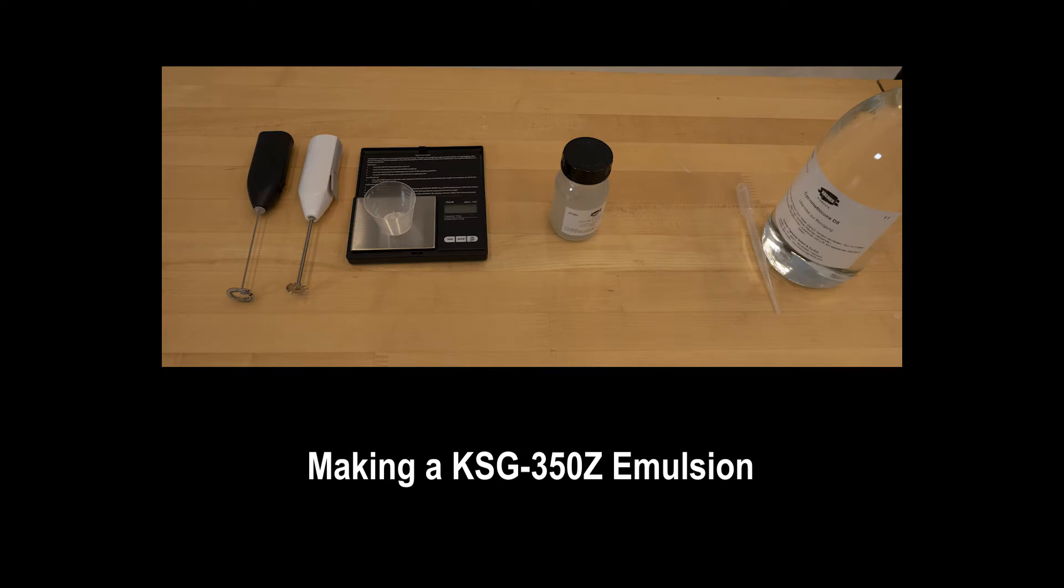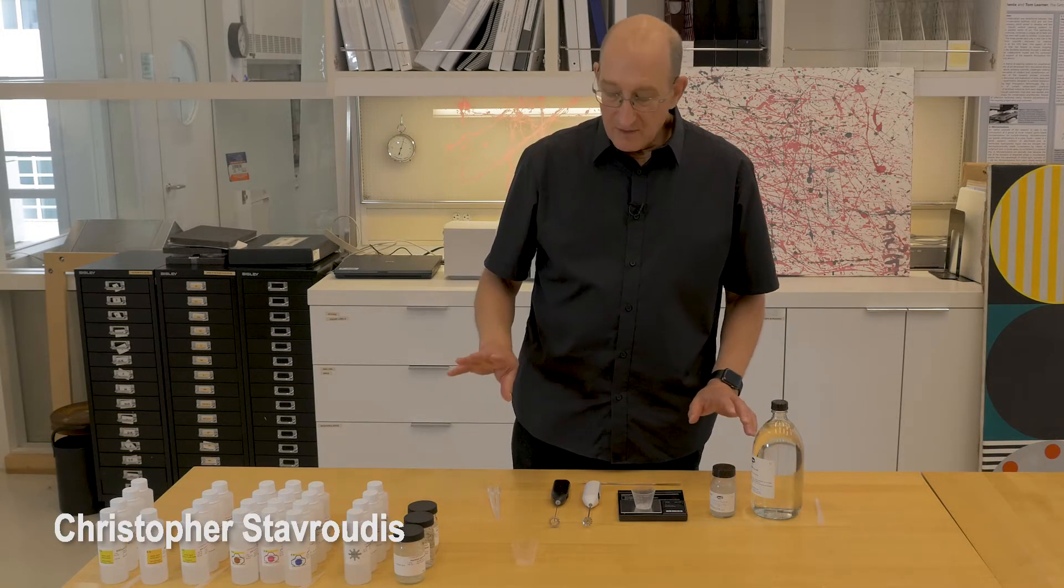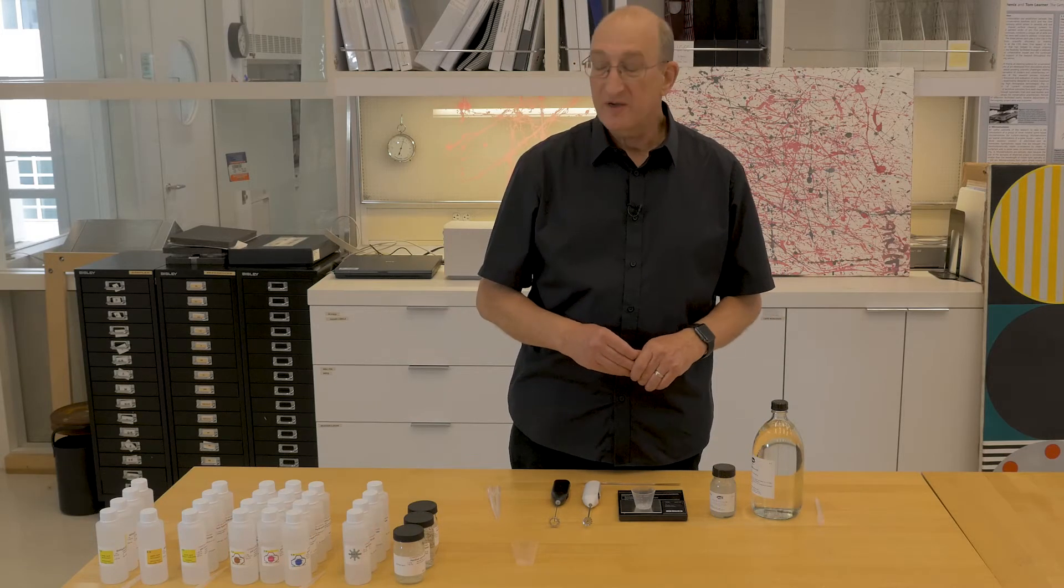To make an emulsion using Shinitsu KSG350Z, a polymeric emulsion stabilizer, we simply make an aqueous solution with the properties we want and put that into the emulsion stabilizer.